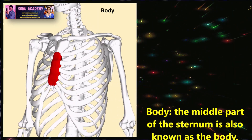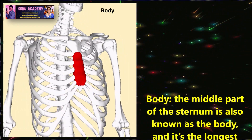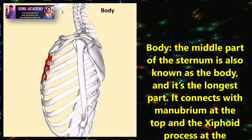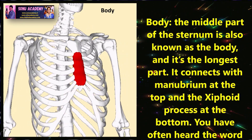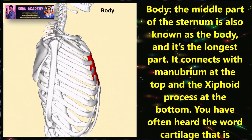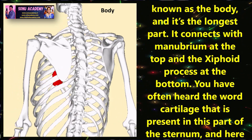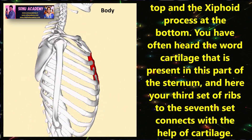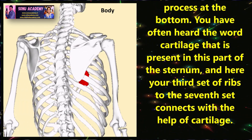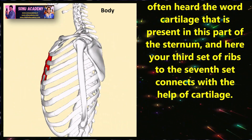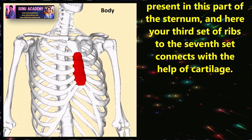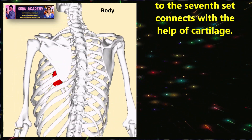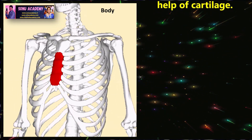Now let us discuss the second part of the sternum, which is also called the body. The middle part of the sternum is known as the body and it is the longest part. It connects with the manubrium at the top and to the xiphoid process at the bottom. Your third set of ribs to the seventh set connects with the help of cartilage.